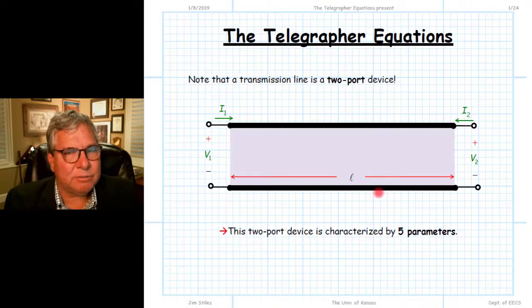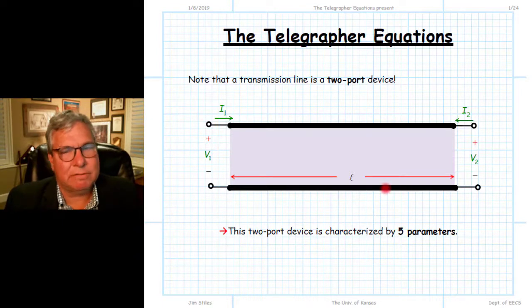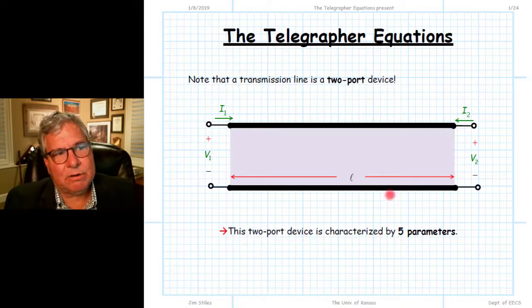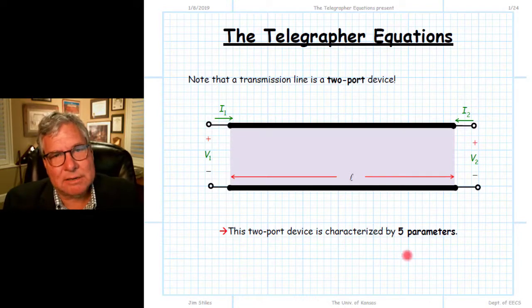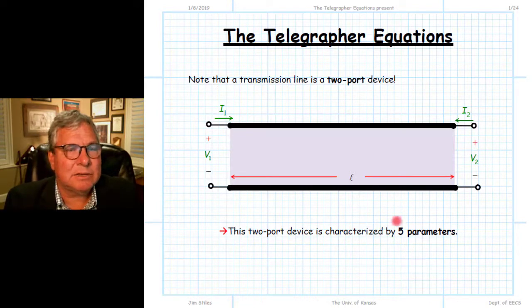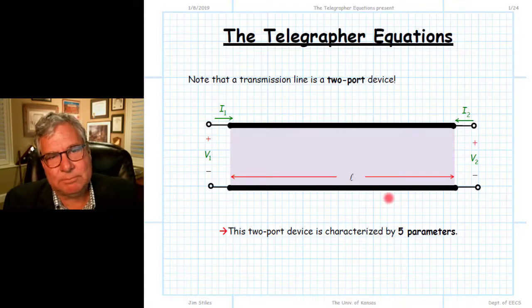To do that, we need to talk about the physical description of the device itself. There are going to be five real parameters that fully characterize this two-port device that we call a transmission line.